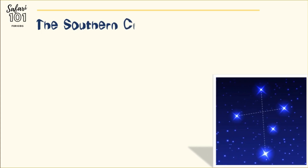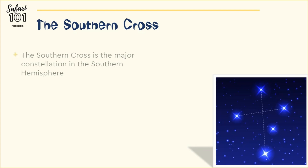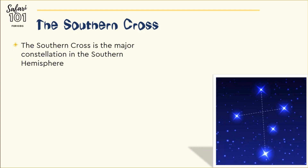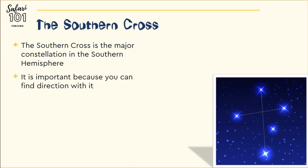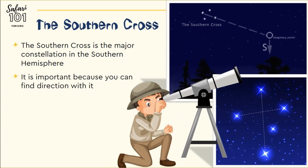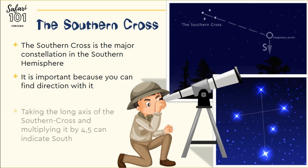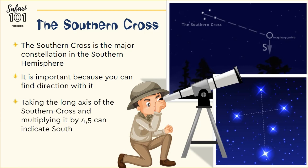Let's look at our first constellation — the Southern Cross. This is probably the most well-known constellation in the southern hemisphere. It is important to know this constellation, how to find it, and how it looks, because you can find directions with it. The Southern Cross is four stars almost shaped like a cross. If you connect the two stars furthest apart and multiply that distance by 4.5, then bring that point down to the horizon, it will indicate south. This is one of the oldest methods of how people navigate.